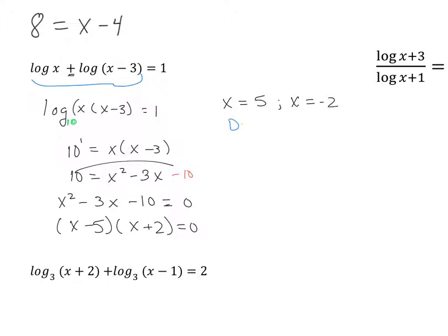But recall, we have domain that we need to check. And anything that is inside that log of a, a must be greater than 0. And if I look at that, that checks out for 5, but that does not check out for x is equal to negative 2. So that is not part of my solution. The only solution for this question would be x is equal to 5.